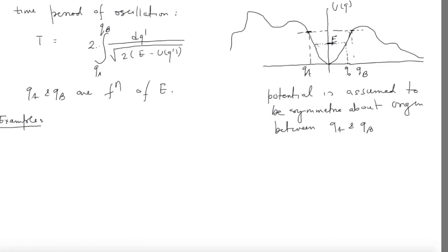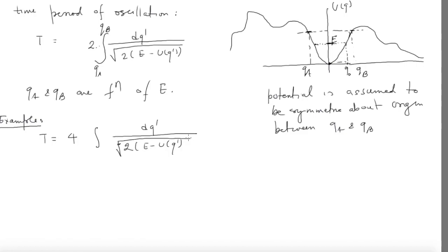You already know from the exercise that the time from one turning point to the other equals the return time. On top of that, since the potential is symmetric, the time from 0 to Q₀ is one-fourth of the time period. So the time period T = 4 × (time taken to go from 0 to Q₀). Of course, Q₀ is determined by energy.